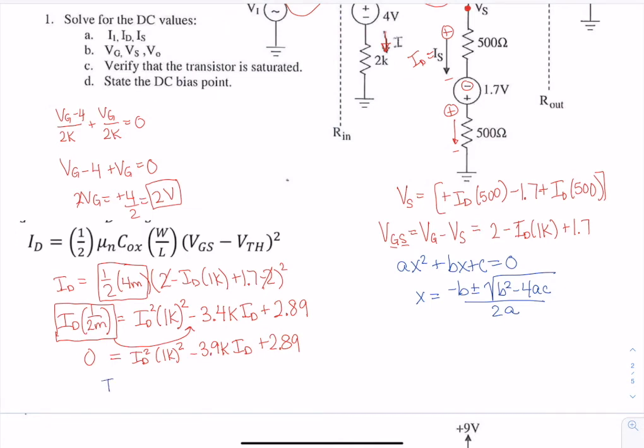So we're going to put this into that form. ID is equal to, b in this case is 3.9k, plus or minus the square root of 3.9k squared. A is 1k squared, and c is 2.89. Then 2a will be 2 times 1k squared. So this gives us two values, 2.9 milli and 1 milli.